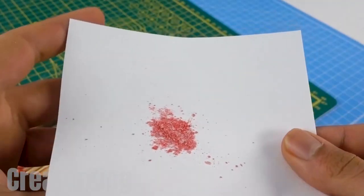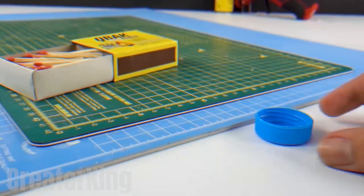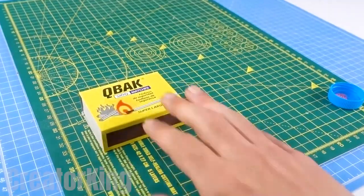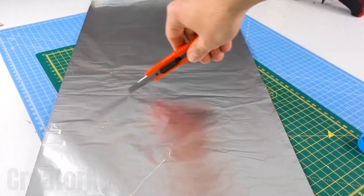Grind the large pieces with the help of a spoon until a very fine powder is obtained. Take the sheet with all the powder and fold it slightly to concentrate it all in a single channel.